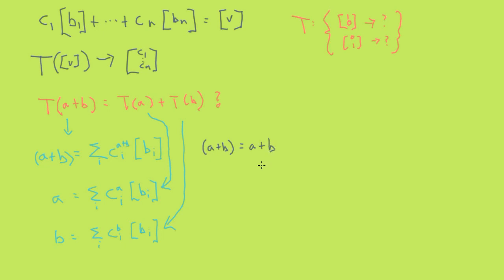Since a plus b equals a plus b, we can gather like terms to show that for every i, the coordinate of the vector a plus b in the basis b is equivalent to the coordinate of the vector a in the basis b plus the coordinate of the vector b in the basis b.